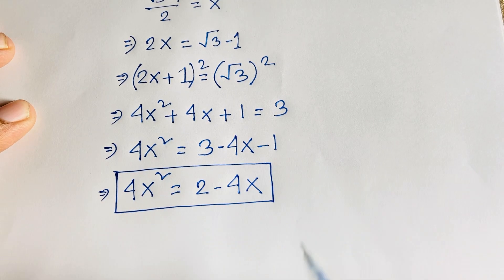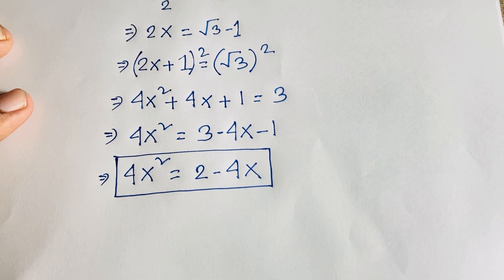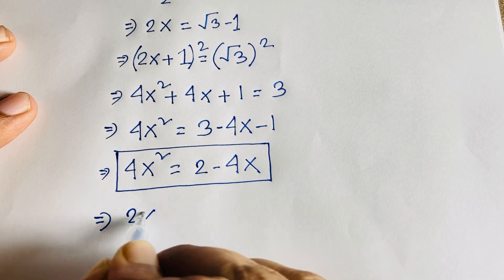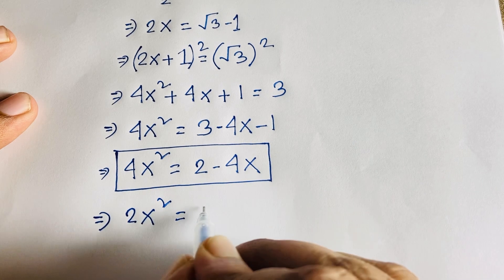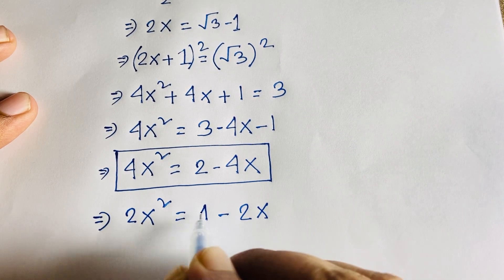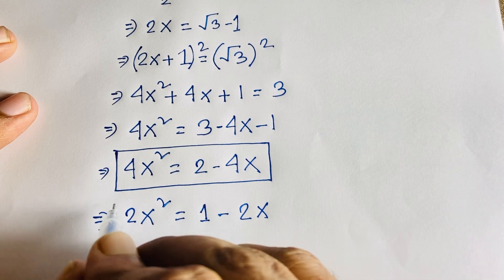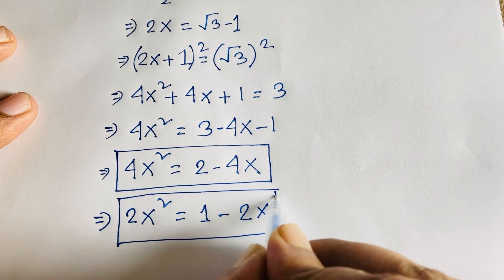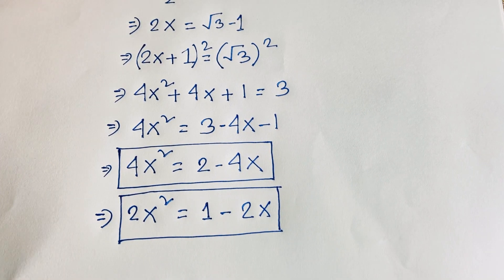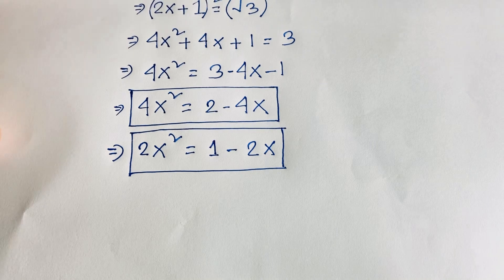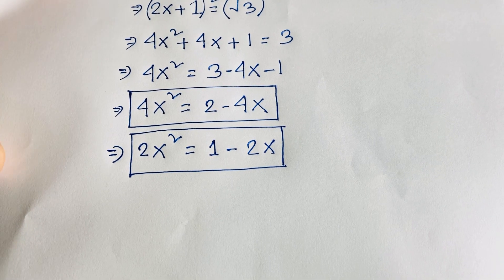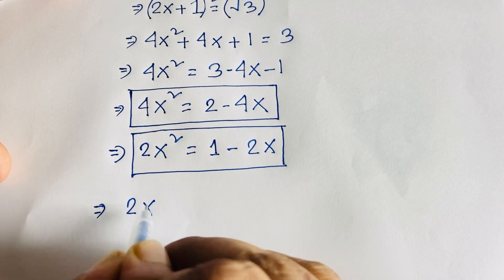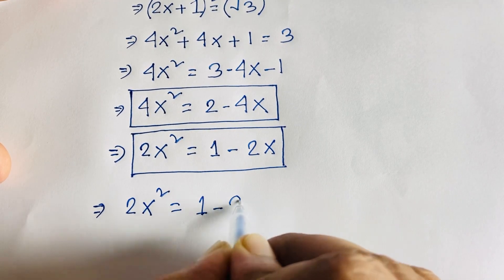Now dividing both sides by 2, we get 2x² = 1 minus 2x. So we have two useful equations: 4x² = 2 minus 4x, and 2x² = 1 minus 2x.